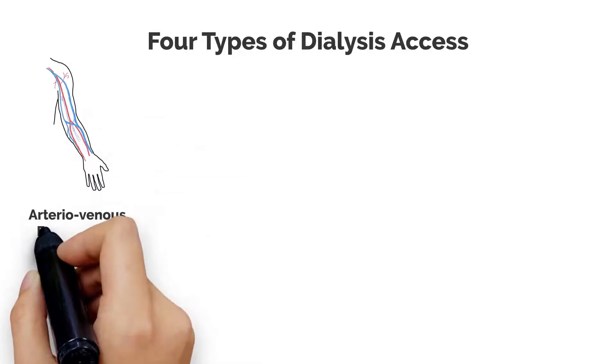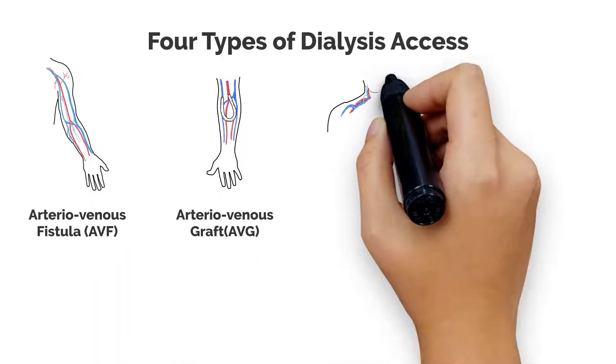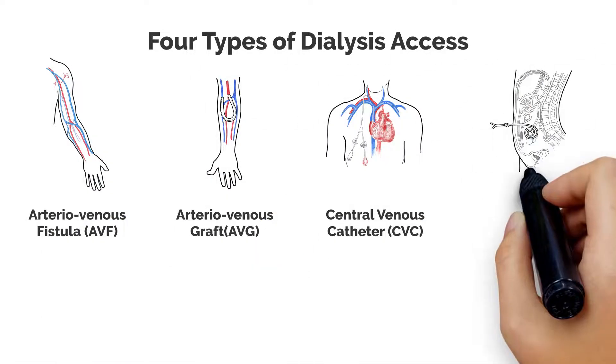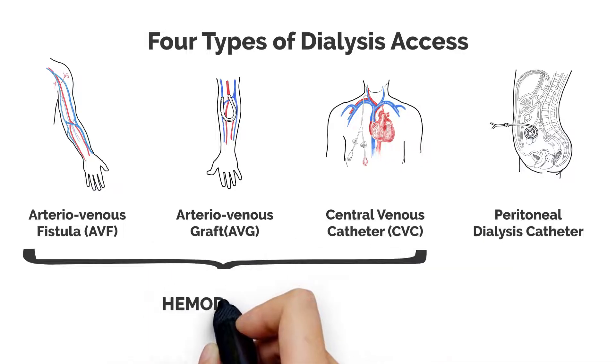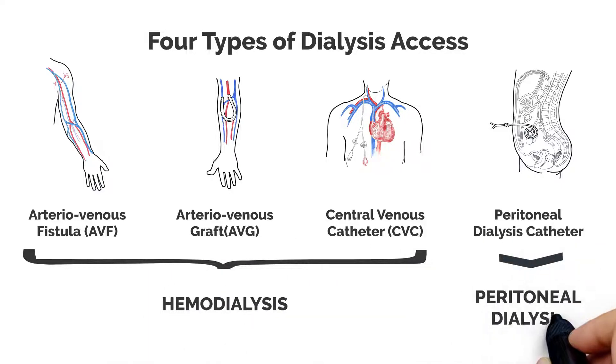There are four types of dialysis access. The first three are used for hemodialysis, while the fourth type is utilized for peritoneal dialysis.